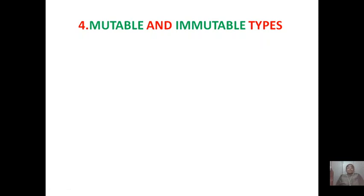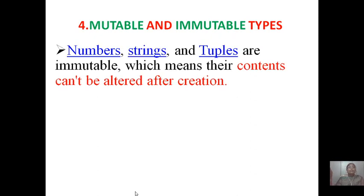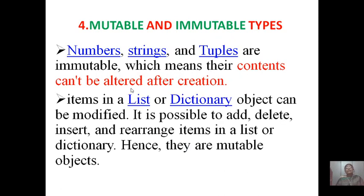Now let us understand what is mutable and immutable types. Numbers, strings, and tuples are immutable, which means their contents cannot be altered once after creation. If you cannot change them it is considered as immutable. If you can change them it is considered as mutable. So numbers, strings, and tuples are immutable. But list and dictionaries are mutable. That means you can make changes like you can add, delete, insert, and rearrange the items in a list or dictionary.